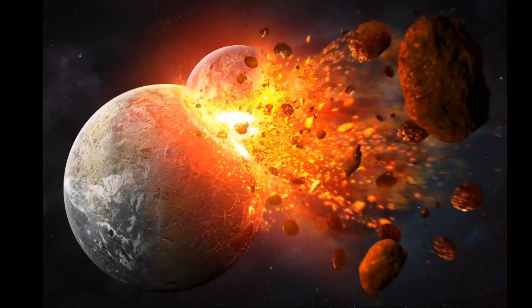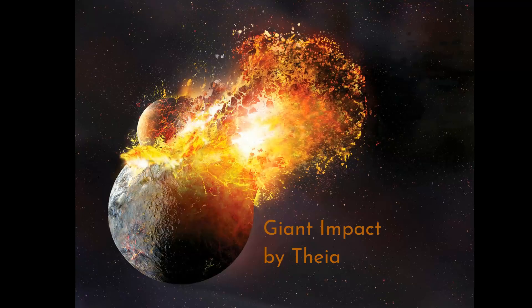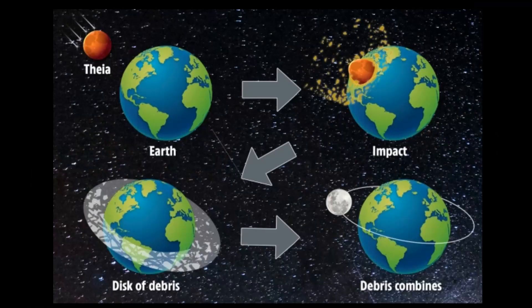The most common theory about where the moon came from is the Giant Impact Hypothesis. The hypothesis states that when the earth was quite young, a planet-sized object collided with our planet. This huge object is known as Theia. The earth is 4.5 billion years old, and Theia's giant impact happened around 4.5 billion years ago as well. The harsh impact caused debris to explode and eject from earth's surface.